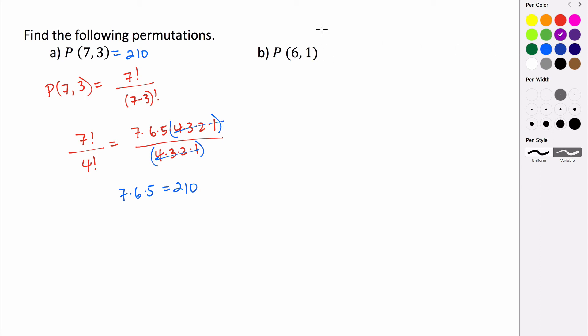Let's take a look at this second one, the permutation of 6 objects taken one at a time. In the numerator we have 6 factorial, and in the denominator it's 6 minus 1 factorial. So we end up with 6 factorial over 5 factorial.